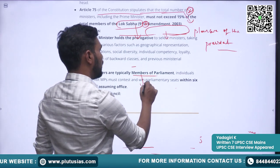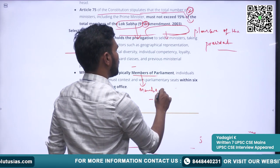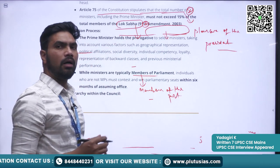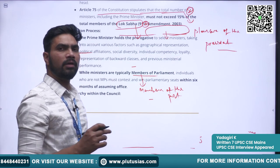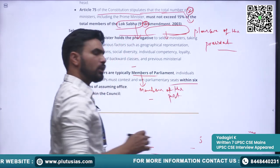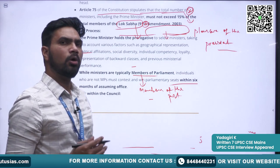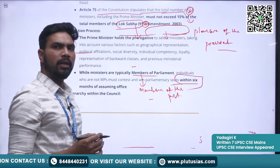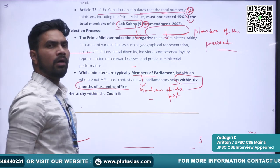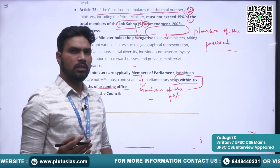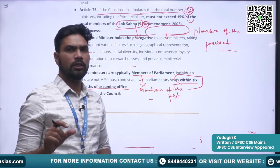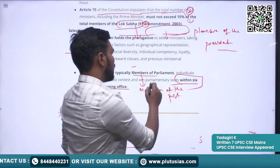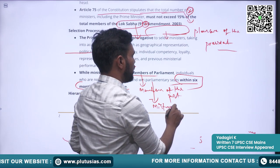Another qualification is that ministers should be members of Parliament — belonging to either Rajya Sabha or Lok Sabha. However, persons who are not members of Parliament can also be appointed as Ministers, but the condition is that within six months after appointment they should be elected to either house. Otherwise, they will lose their Ministership.